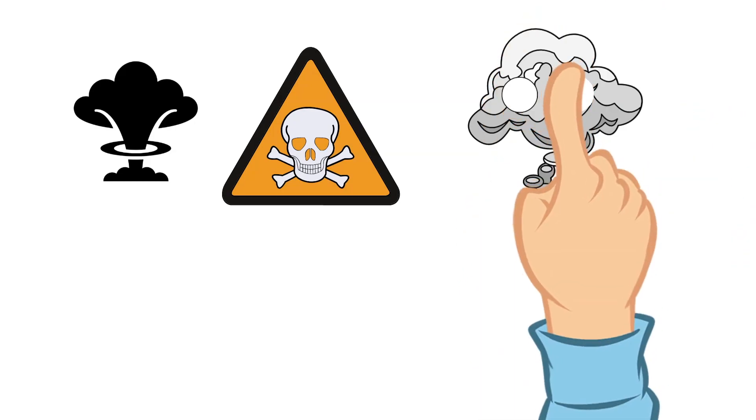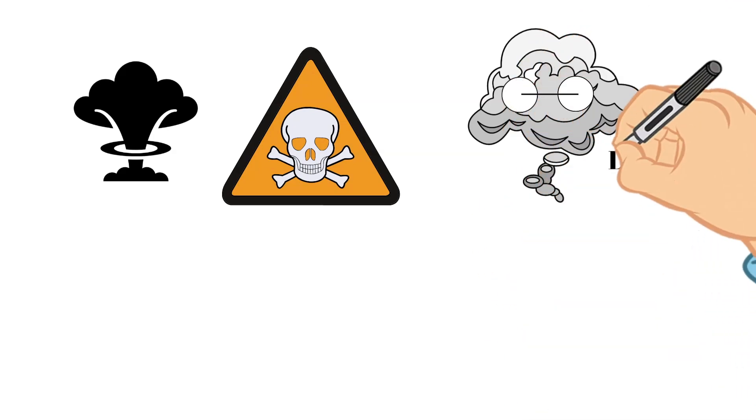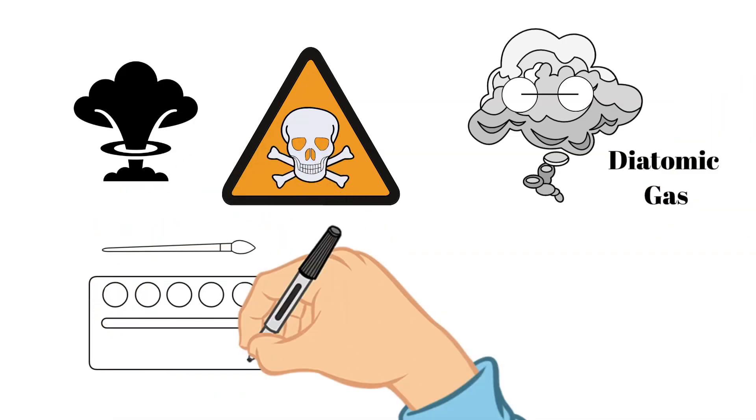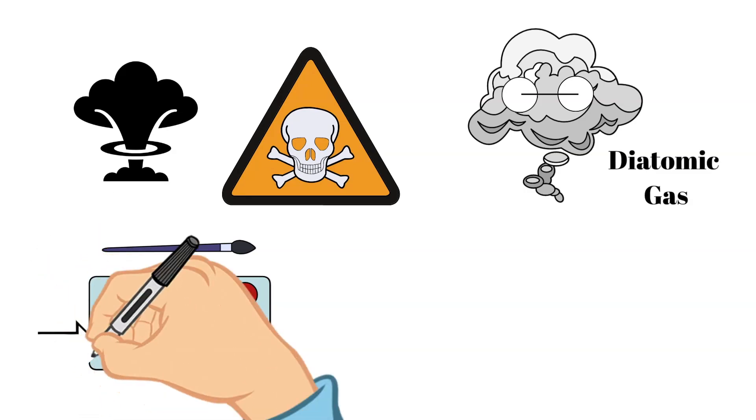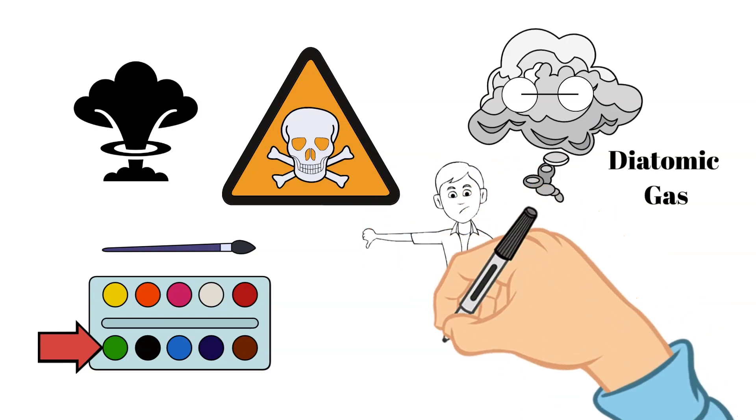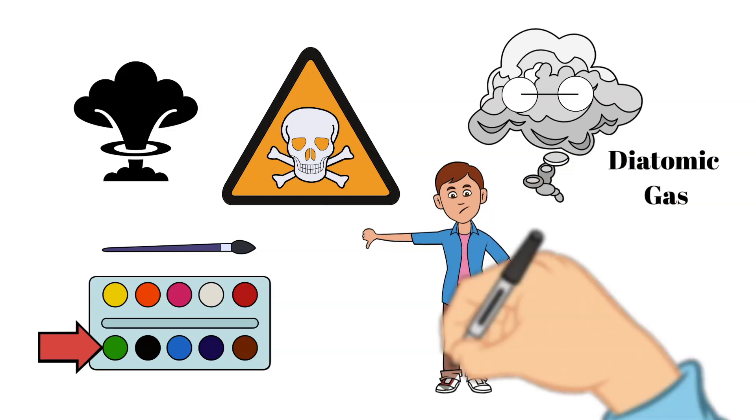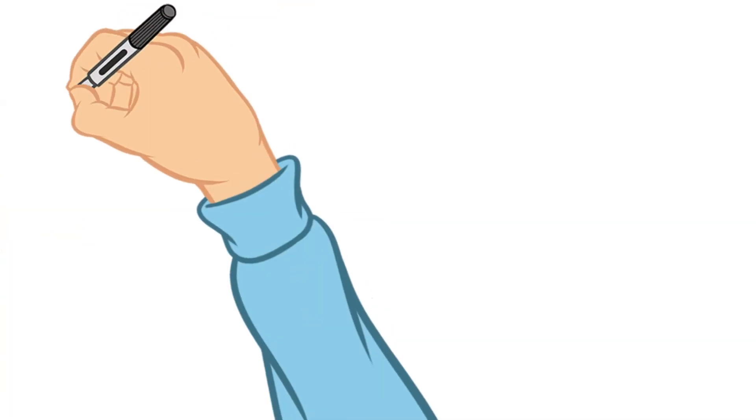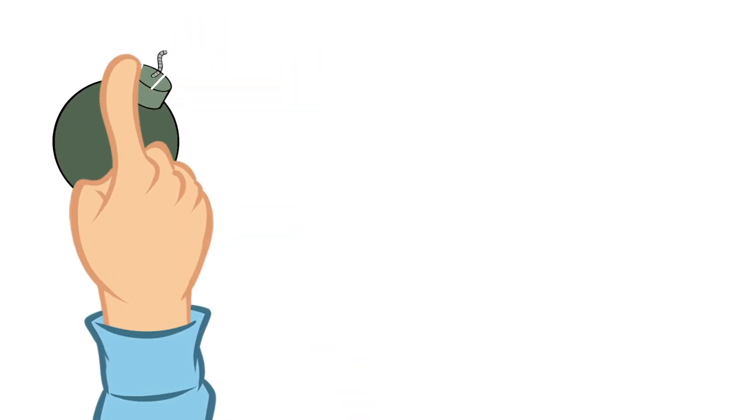In standard conditions, fluorine forms a gas, and it is made up of two fluorine atoms. This is called a diatomic gas. It is a pale greenish yellow color, and it has a very strong smell. It is important to note that fluorine is very toxic for humans, and it can corrode many things. Many of the reactions with fluorine are very sudden and explosive.